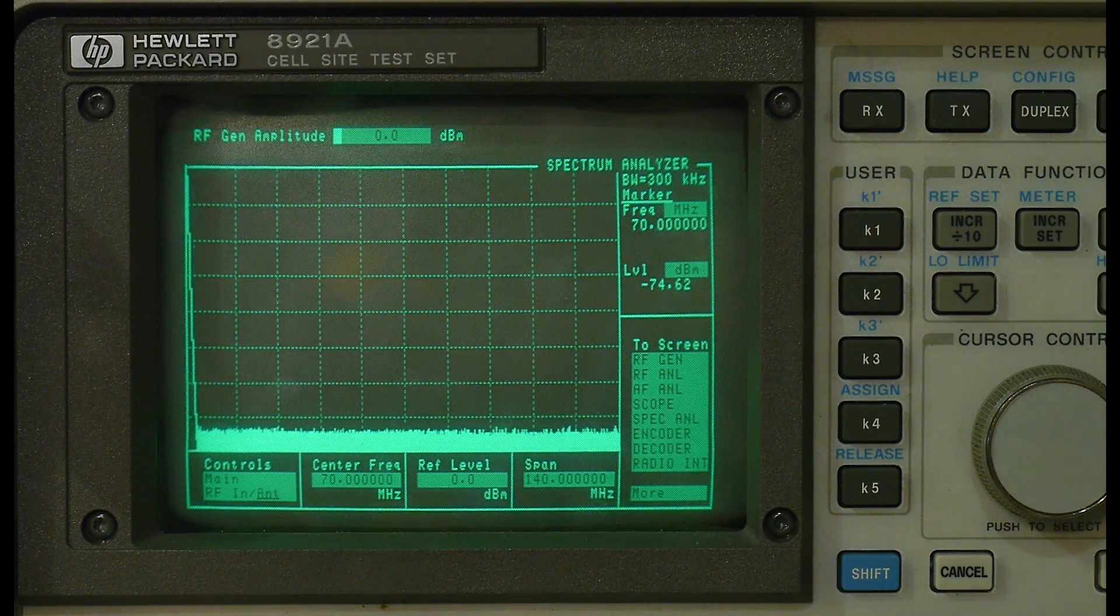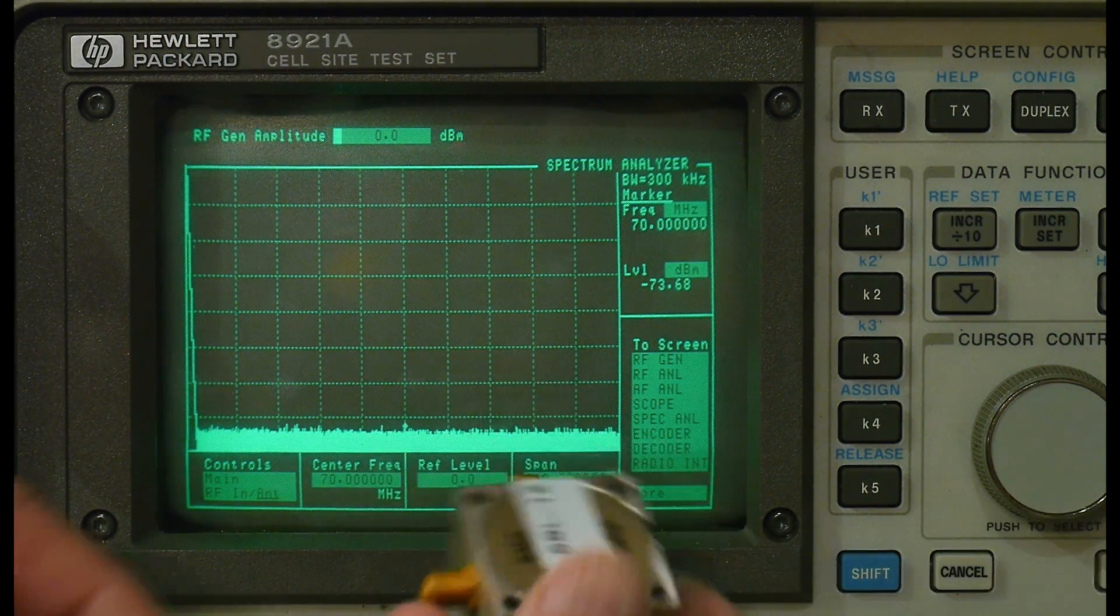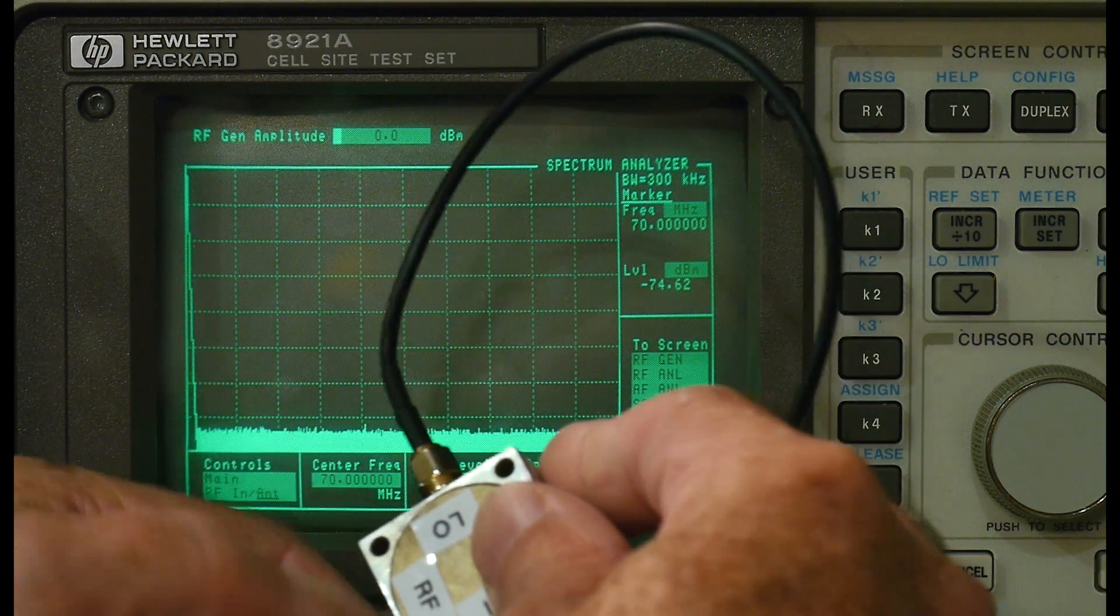So we're going to take that signal and we're going to call it the RF in our mixer. Okay, so that's the frequency that we're going to start out with. So here's my mixer and we're going to put that into RF.